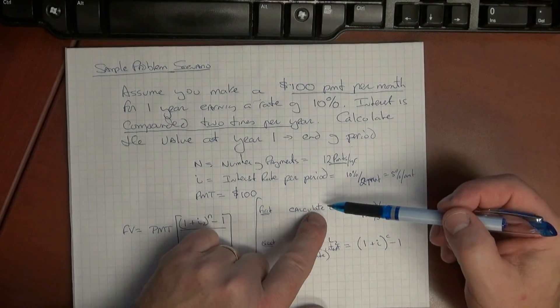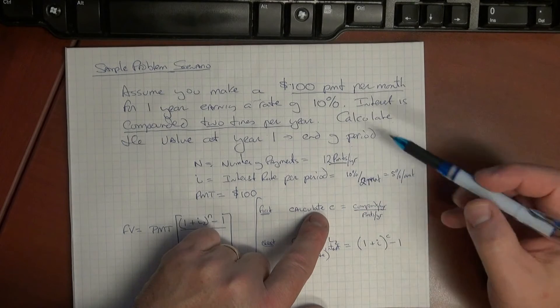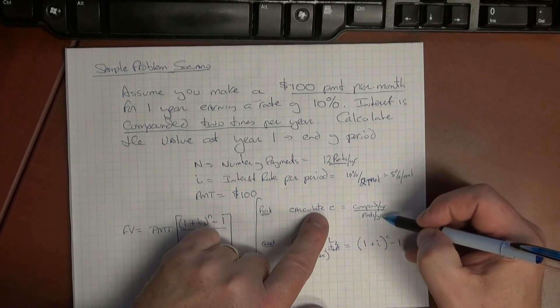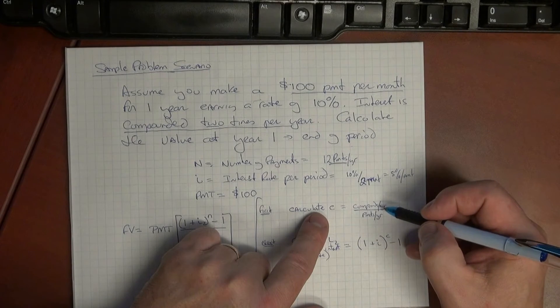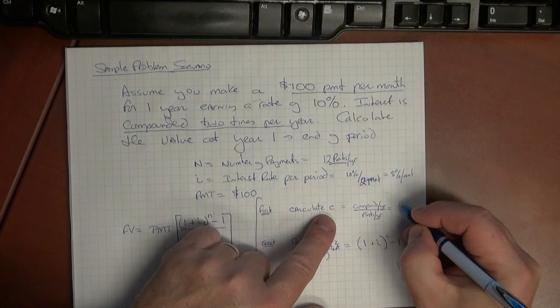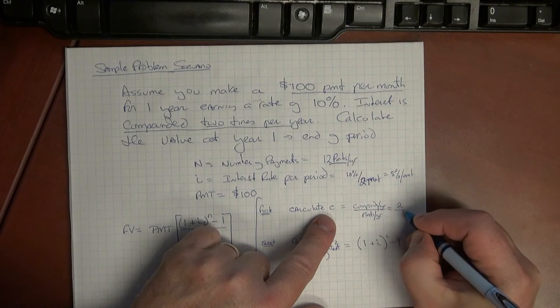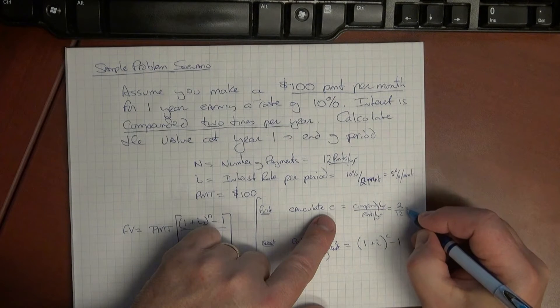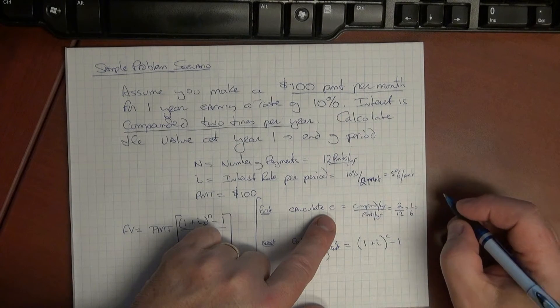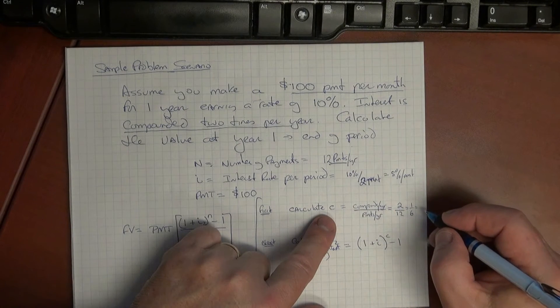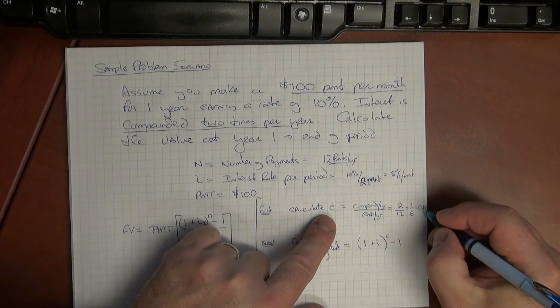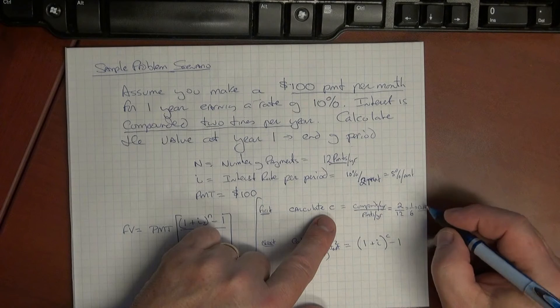First we calculate something called the value of c. The value of c is simply the number of compounds per year divided by the number of payments per year. So in this particular instance we've got two compounds per year and 12 payments. So this is one-sixth or that would be the value of c is 0.167.